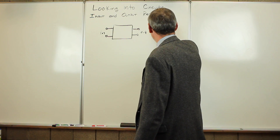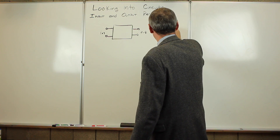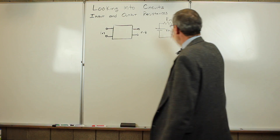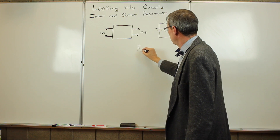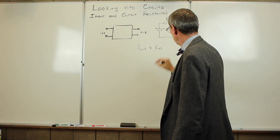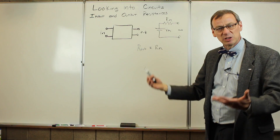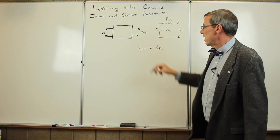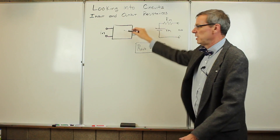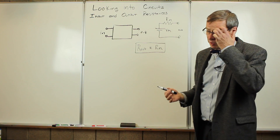Let's start by looking at the output side, because that's what we've been thinking about. On the output side, we can simply do a Thevenin equivalent with R-Thevenin and V-Thevenin. The output resistance is just defined to be the Thevenin resistance. So if we can measure the Thevenin resistance, then we have the output resistance of this particular circuit. It's the Thevenin equivalent, and we're interested in the Thevenin equivalent resistance.